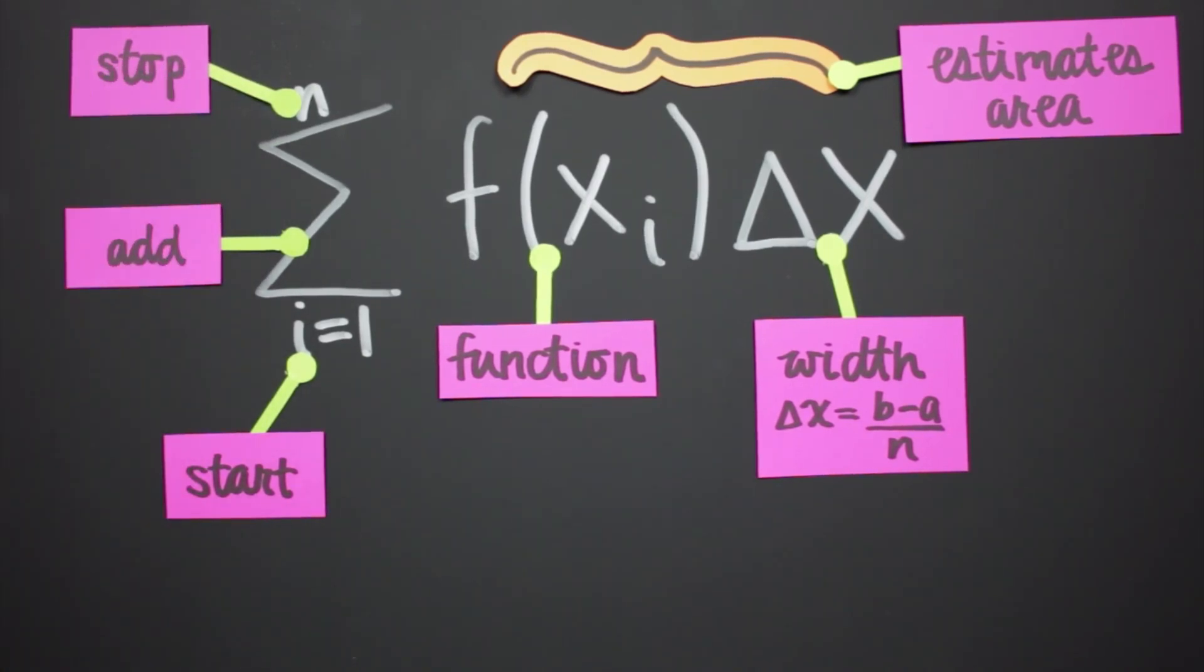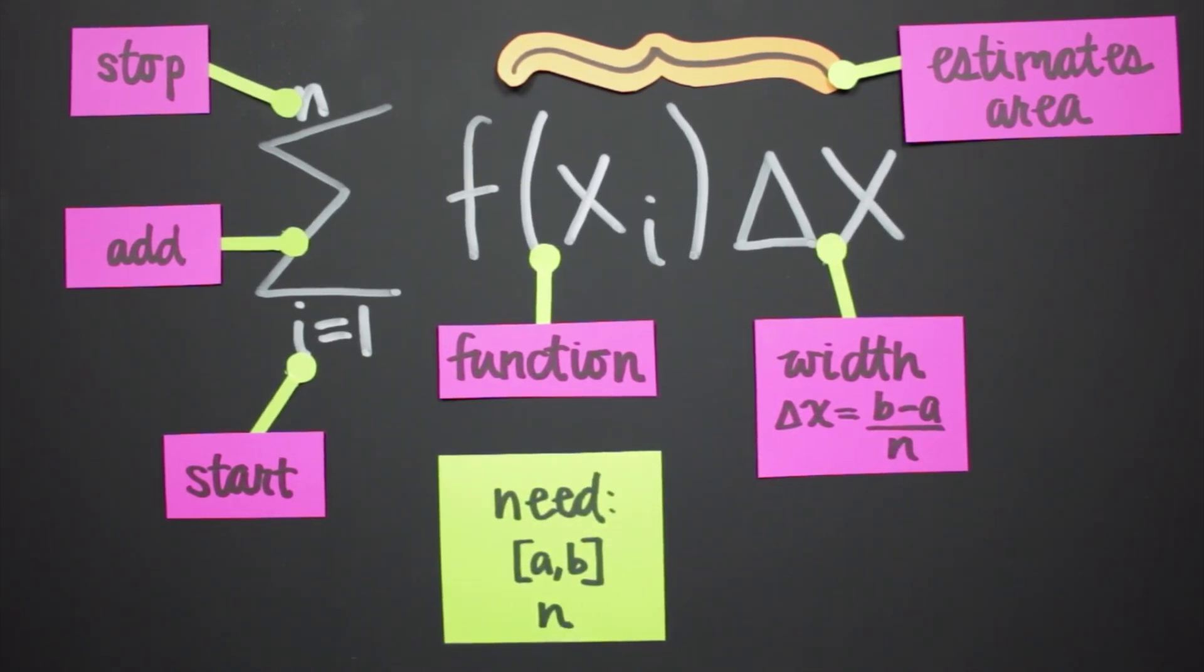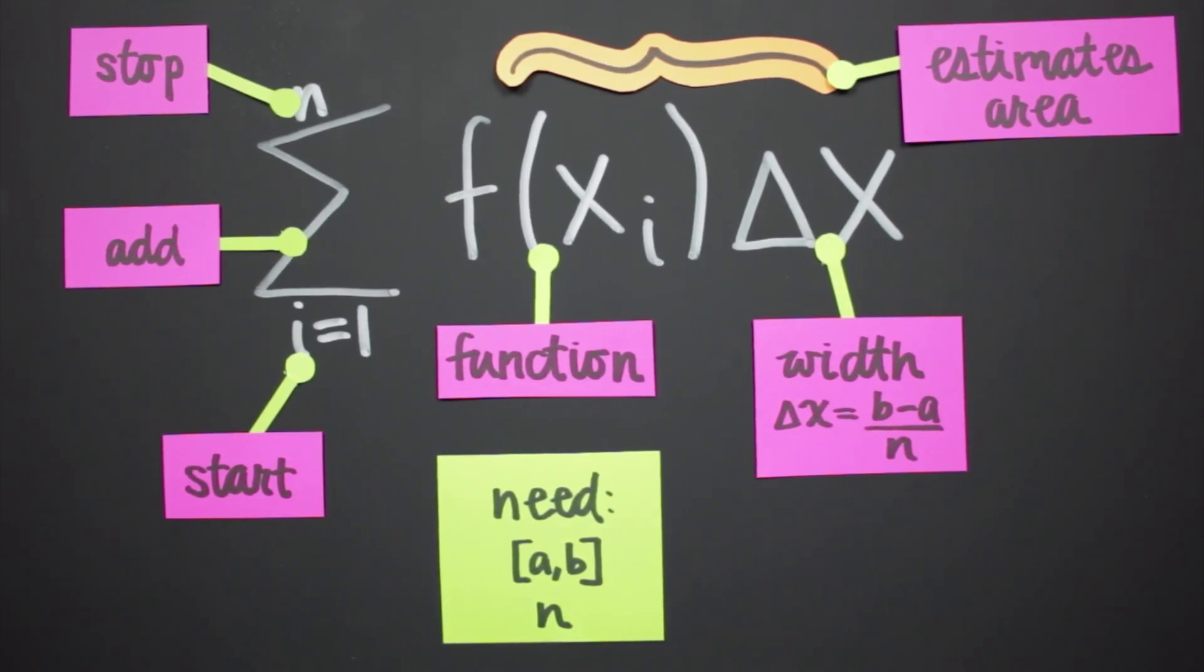So, to use a Riemann sum to estimate area, all we need is the interval ab that's going to bound the area, and the number of rectangles n that we're going to use. If we have just those two things, we can use the Riemann sum to estimate the area, and we wouldn't even have to bother with integrals at all.